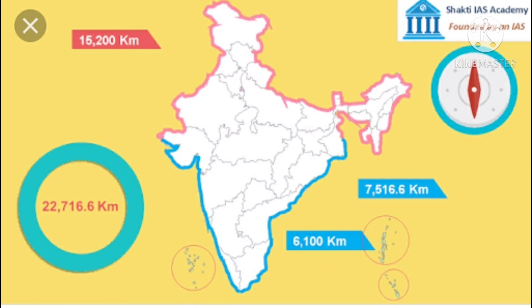India has a 15,200 km long land frontier to its north-west, north and north-east. This frontier consists of high mountain ranges which are the highest in the world. About 6,100 km long coastline of the mainland of India is washed by the Indian Ocean, the Arabian Sea and the Bay of Bengal. The total length of the coastline including those of the islands is about 7,517 km.